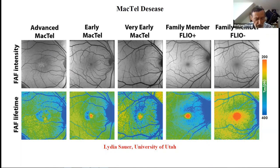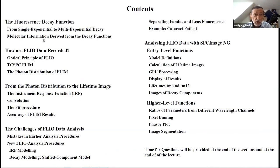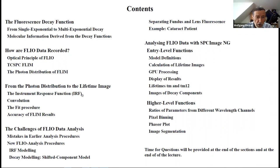That's the introduction and the target we want to reach with FLIO. The table of contents: at the beginning I will say something about the fluorescence decay functions and what they tell us. Next is how FLIO data are recorded—optical principle, TCSPC, FLIM—what we are recording, how the raw data look, how to get a beautiful lifetime image from the photon distribution, what the instrument response function is, convolution, the fit procedure, and accuracy of FLIM results.